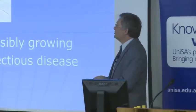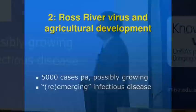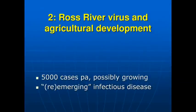Let's move on to another case: Ross River virus, a mosquito-borne disease. We get about 5,000 cases every year in Australia, and it's considered an emerging infectious disease because the more we disrupt the environment, the more cases we seem to get. A hundred years ago there were no epidemics of Ross River virus at all, and now it's occurring in places where it didn't before, making it an emerging public health problem.